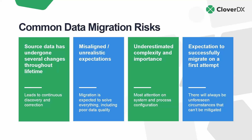There's often an underestimated nature to the complexity and importance of the migration. We're thinking macro scale — system and process configuration — but the actual boots-on-the-ground work of mapping different systems out, field to field, making sure everything matches up, is really quite complex and harrowing for most businesses. The expectation is to fully and successfully migrate on a first attempt, but there are often circumstances that cannot be mitigated. These are things to keep in mind to maintain realistic expectations and make sure everyone is on the same page through this traditionally very tough process.